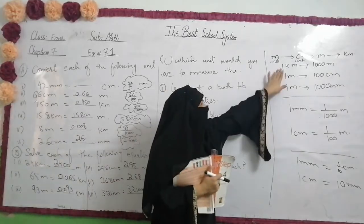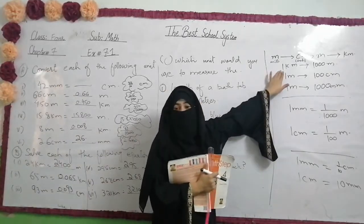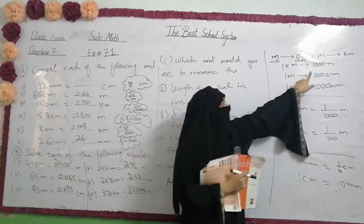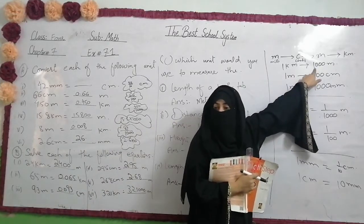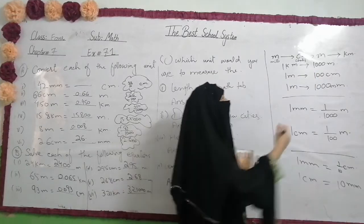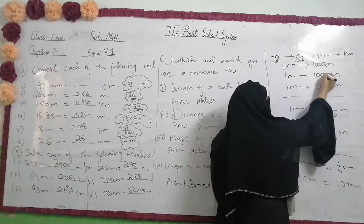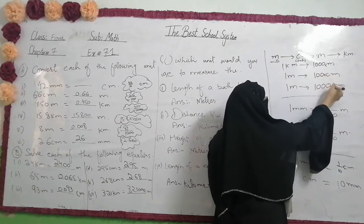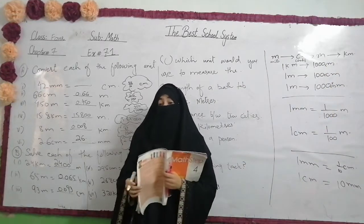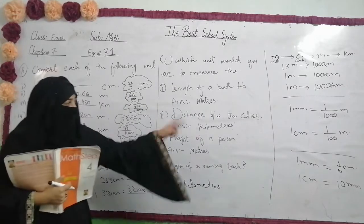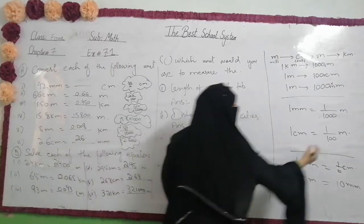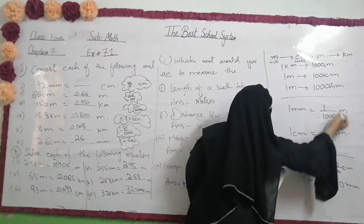If you want to go into kilometers from another unit, you will multiply it by 1,000. We have multiplied by 1,000. I will follow the formula and follow the method. You have solved all the questions.